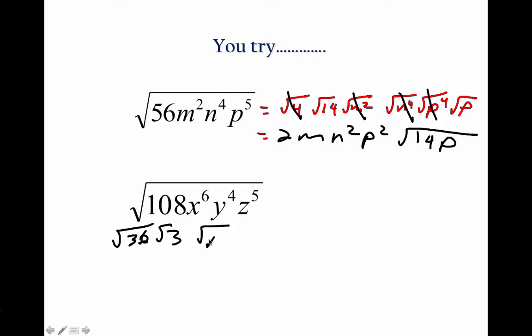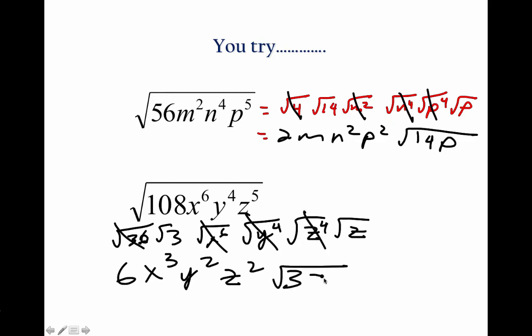And then I have x to the 6th and a y to the 4th. And I'm going to change z into z to the 4th and z to the 1. And I get 6x cubed, y squared, z squared, square root 3z.